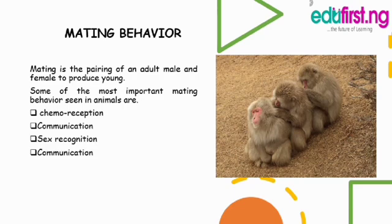Mating is the pairing of an adult male and female to produce young — that is, the coming together of an adult male and female to produce an offspring. Some of the most important mating behaviors seen in animals are: number one, chemoreception behavior; and number two, male and female communication.